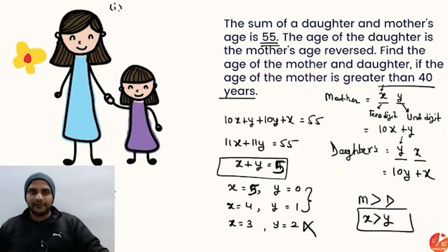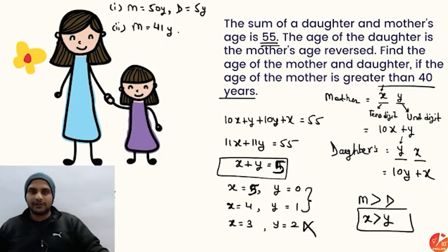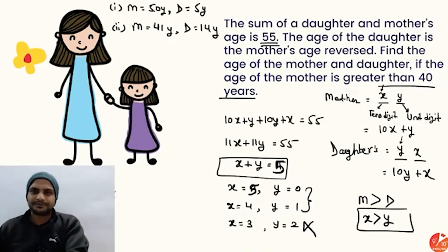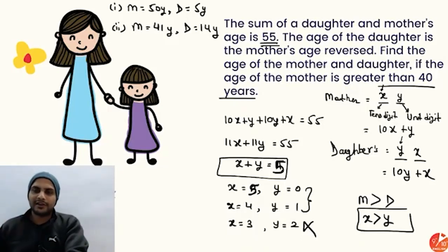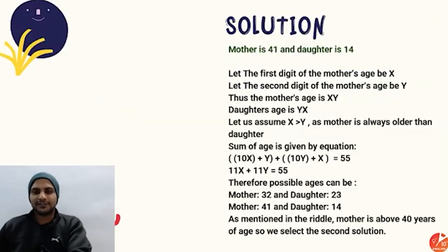Both answers are acceptable: mother 50, daughter 5 — or mother 41, daughter 14. The case of 05 for the daughter isn't necessarily a two-digit age, but since the problem doesn't restrict it, both solutions are valid.